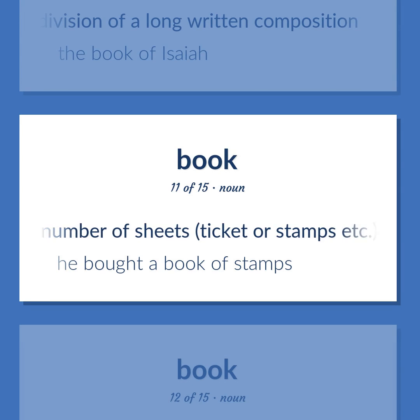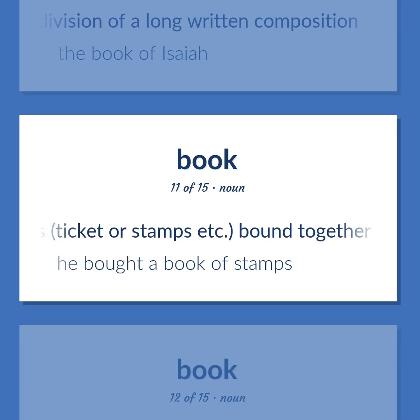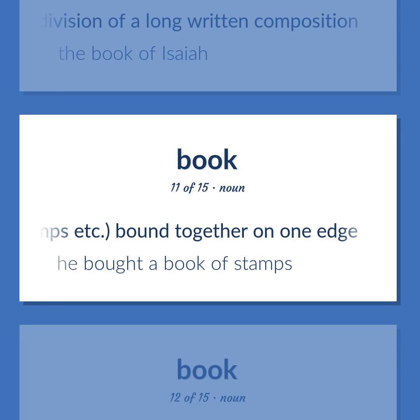Book. A number of sheets, tickets, or stamps, etc., bound together on one edge. Example: He bought a book of stamps.